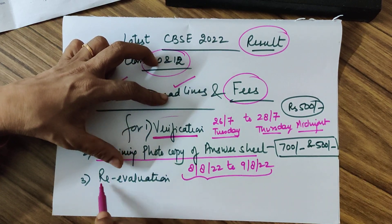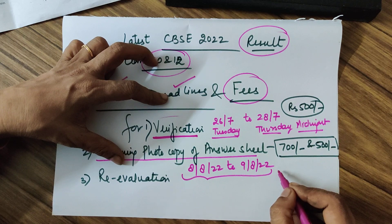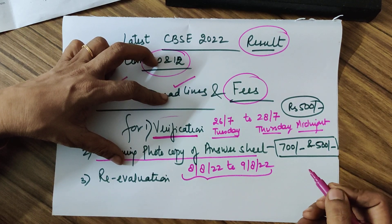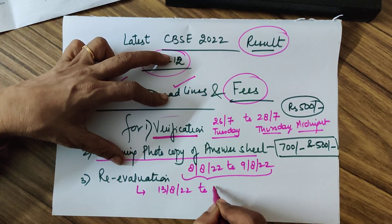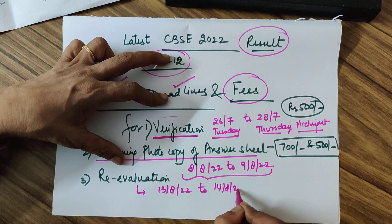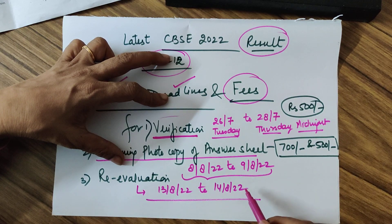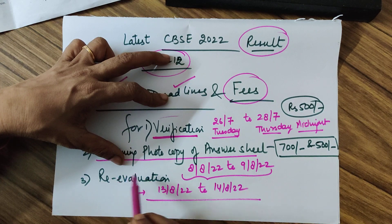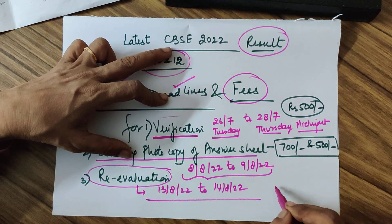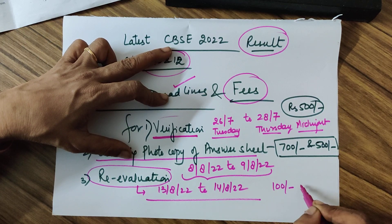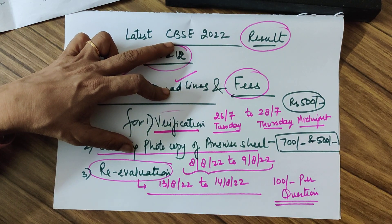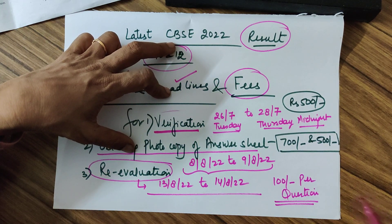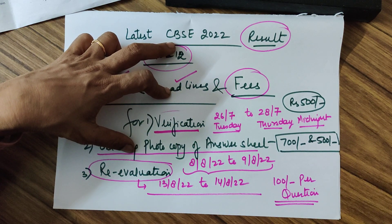Lastly, if you decide to go for revaluation and have identified which questions you want re-checked, the dates are 13th August to 14th August — again one day. By midnight of 14th August you can apply for revaluation after identifying the questions. The cost is ₹100 per question, so be cautious — it is not the revaluation of the full paper, it is per question.